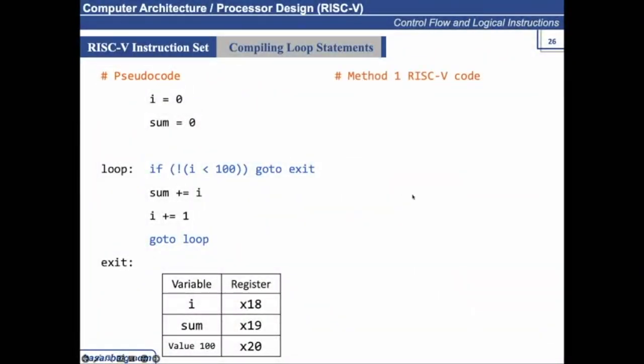So here, method one we are following. x18, x0, 0 we are using addi instruction. And same as the case for sum, x19. What we will write for this instruction?